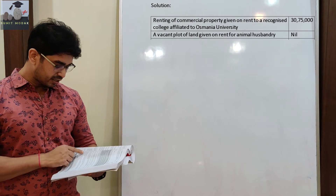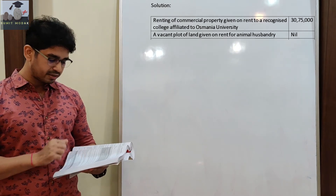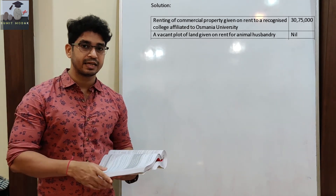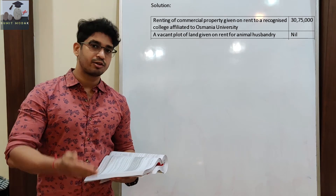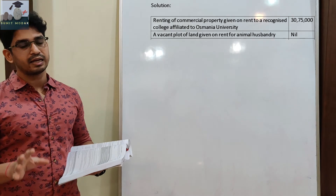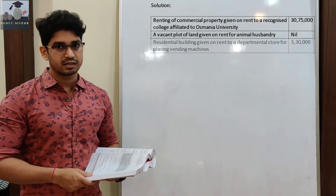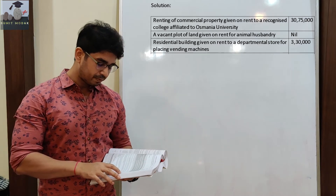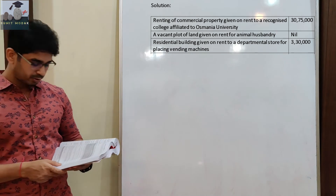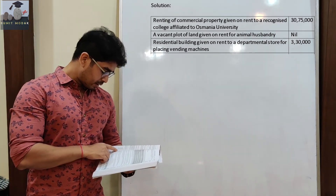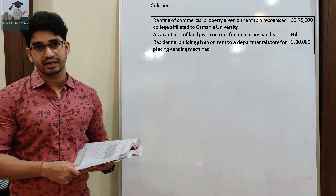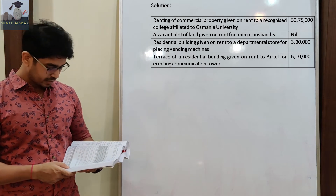Rent of residential building given to a departmental store for placing vending machine — departmental store को उन्होंने vending machine लगाने के लिए अपना residential property दिया। You are giving your residential building for commercial purposes, so in that case आपको GST भरना पड़ेगा, यह supply under GST है। The total amount collected from that departmental store is Rs. 3,30,000, so that is chargeable to GST. Rent of terrace — आप Airtel को terrace भाड़े पर दे रहे हैं, वो तो commercial purpose में हो गया, तो उसमें GST लगेगा।